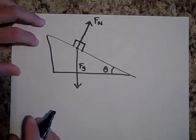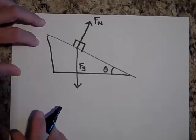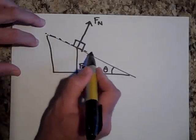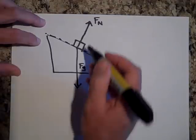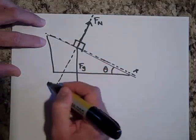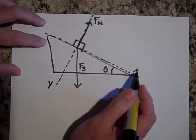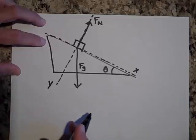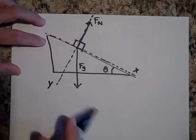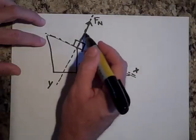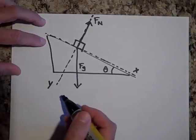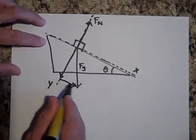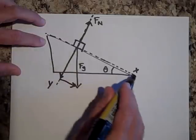If there are no other forces, this object will accelerate down the inclined plane. So I want one axis pointing in that direction — I'll call that the x direction — and the y direction perpendicular to it. I'll make the positive x direction the way it's accelerating. Now I need to break all forces into x and y components. The normal force is entirely in the y direction, but the gravitational force has both x and y components.